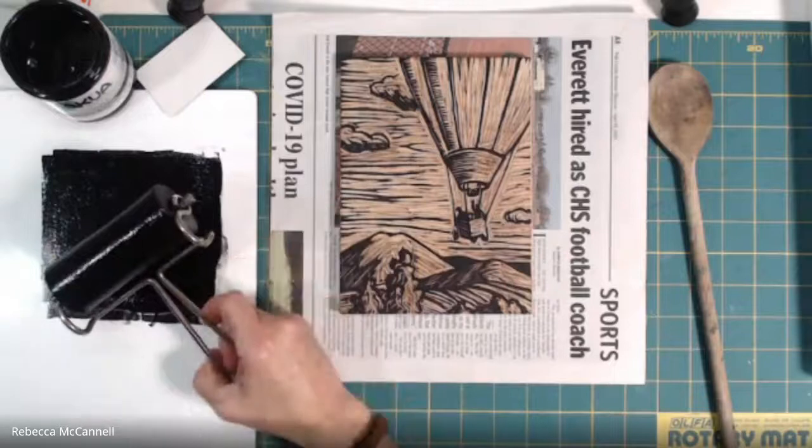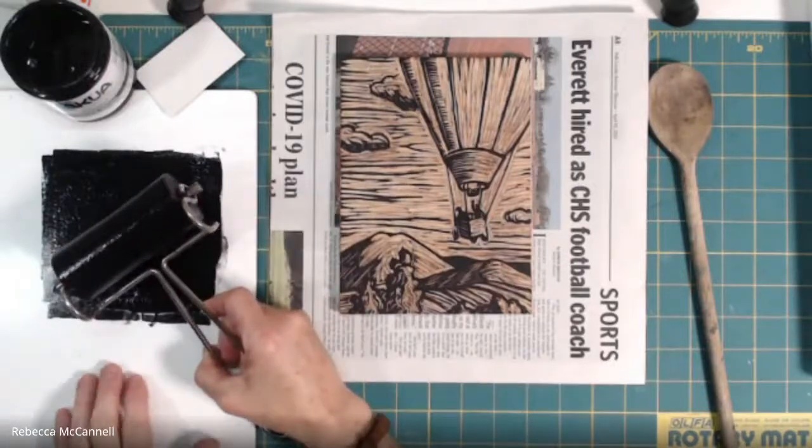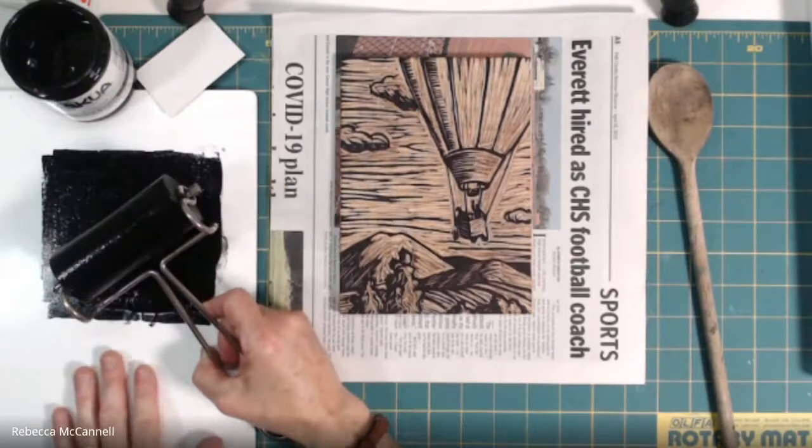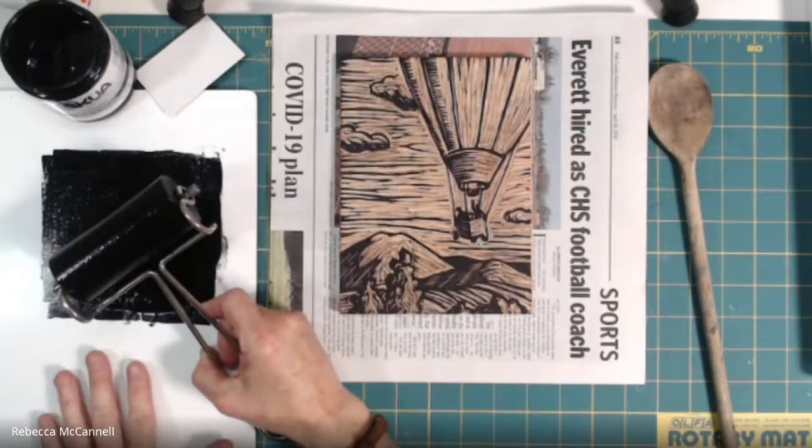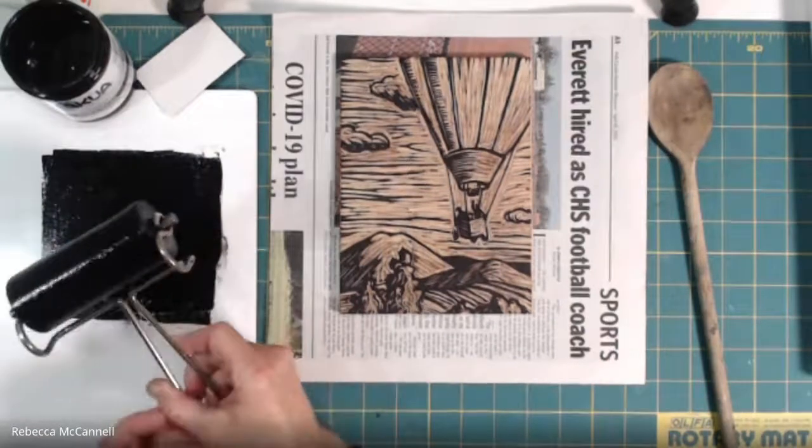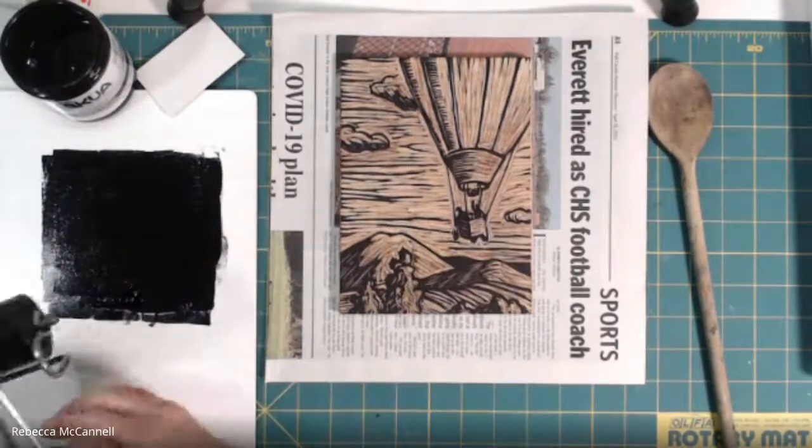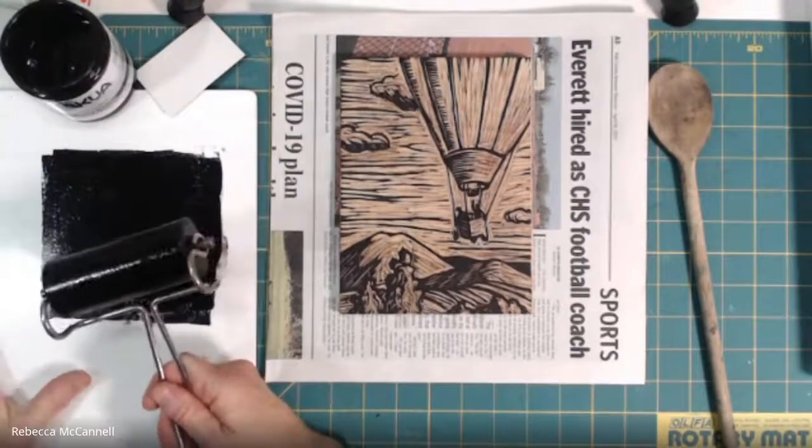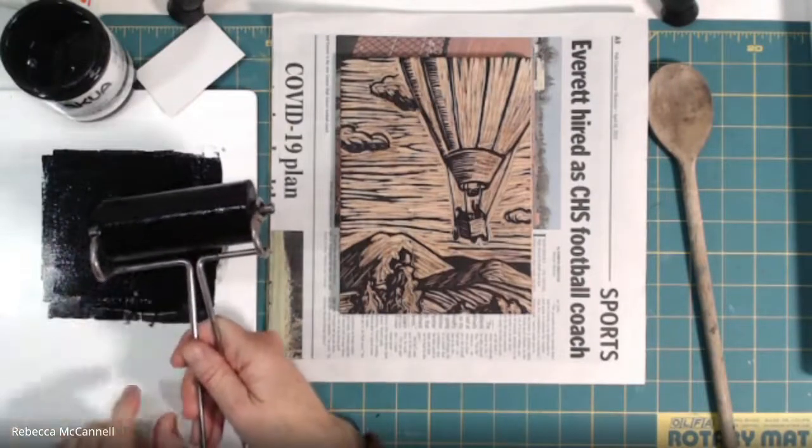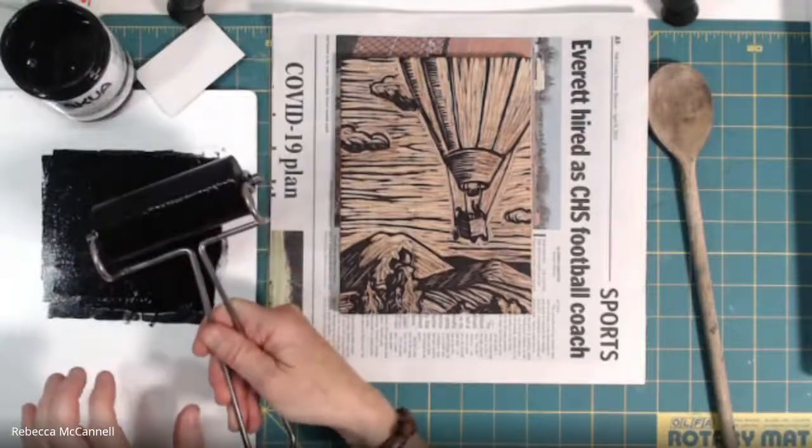You can also use the portable mat that you might get at the dollar store, that's just like a cheap cutting mat. The idea is to have something that's waterproof and not very textured. There are a lot of surfaces that could work - if you have a butcher tray, an old cookie tray, or a scrap piece of tempered glass, all of those things work great.